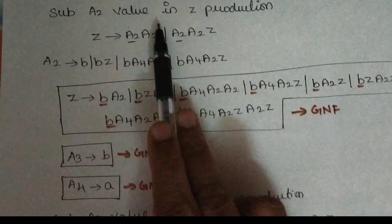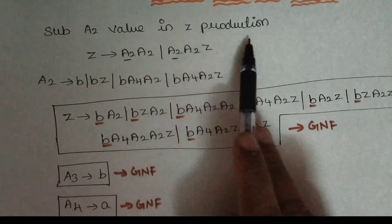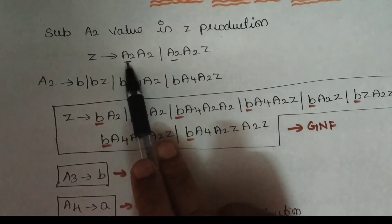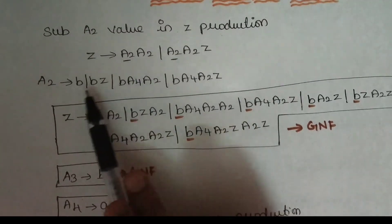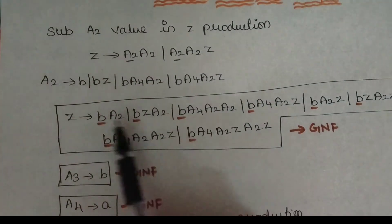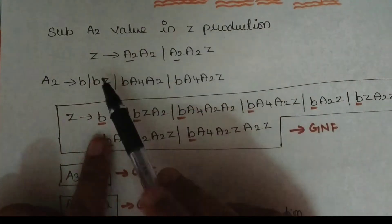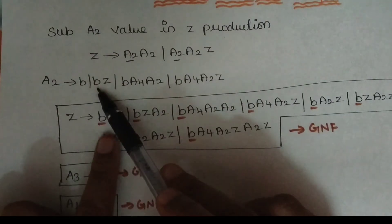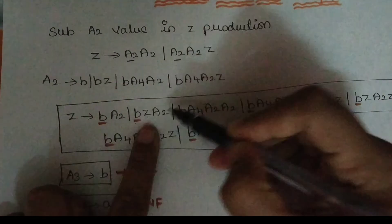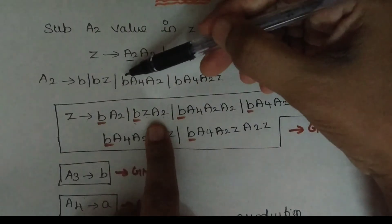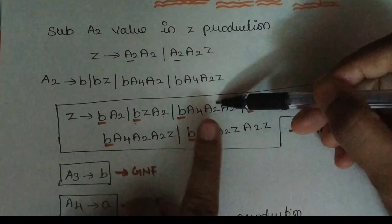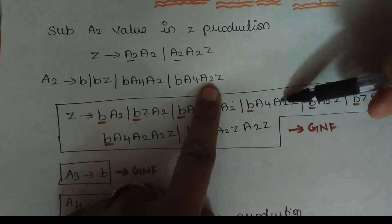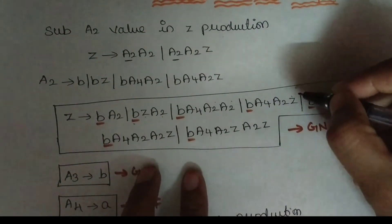We will substitute A2 value into this production. Z goes to A2, A2, A2, A2, Z. A2 will substitute all the values. A2 goes to B, so if we add B — A2 is like A2. If we have BZ, add BZ. A2 goes to B, A4, A2. And we have A2, there will be A2. If we add B, A4, A2, AZ. If we add B, A2, A2.